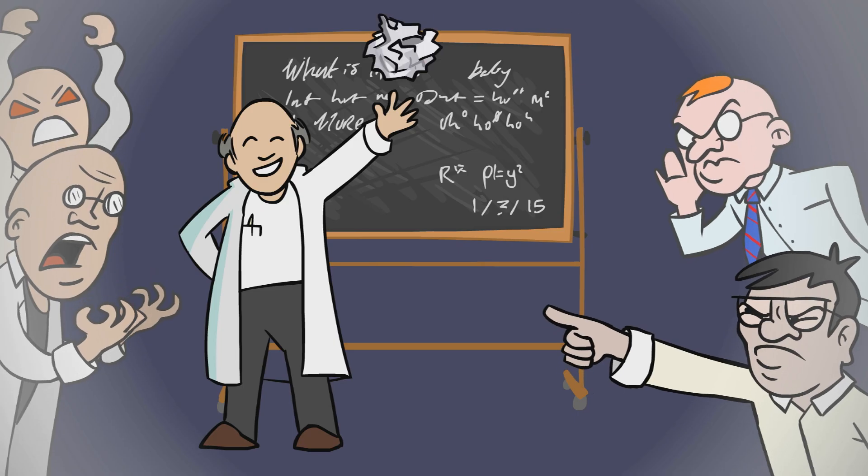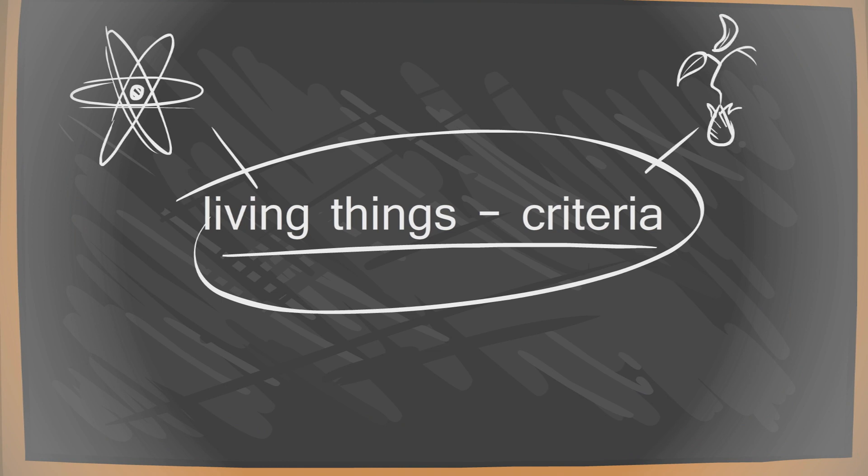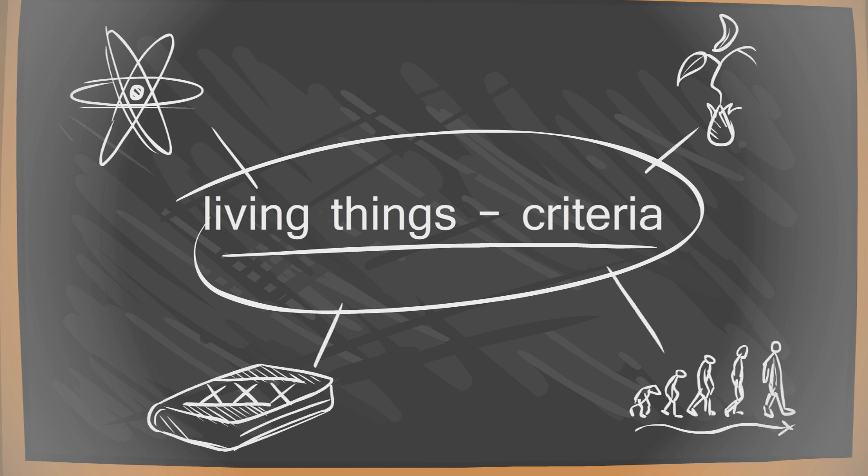Some of the main things that are characteristics of living things are energy use, growth, reproduction, adapting and responding to the environment.